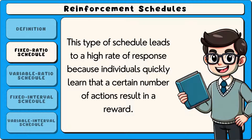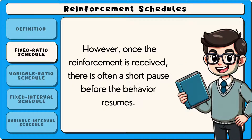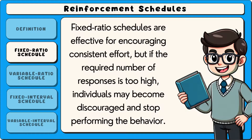This type of schedule leads to a high rate of response because individuals quickly learn that a certain number of actions result in a reward. However, once the reinforcement is received, there is often a short pause before the behaviour resumes. Fixed ratio schedules are effective for encouraging consistent effort, but if the required number of responses is too high, individuals may become discouraged and stop performing the behaviour.